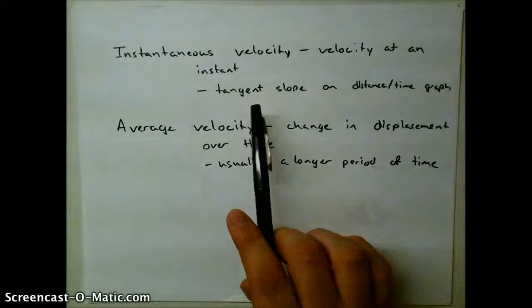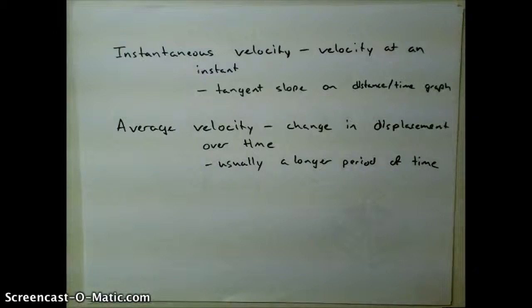So usually average velocity is over a much longer period of time. Instantaneous is usually at that instant. We can find that by looking at tangent slope on a distance time graph.